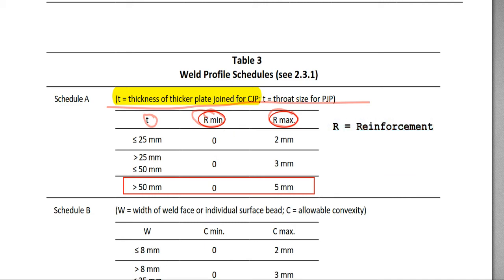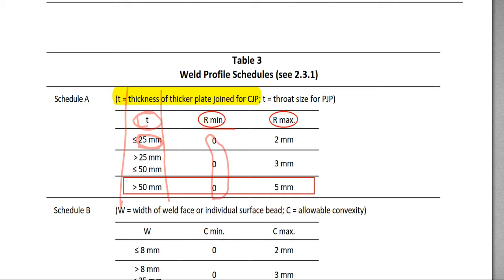This is the condition for the t column — the thickness condition. For thickness less than or equal to 25 millimeters, reinforcement minimum is zero and maximum is 2 millimeters. For thickness greater than 25 mm and up to 50 mm, the reinforcement maximum is 3 millimeters. For thickness greater than 50 millimeters, the reinforcement maximum is 5 millimeters.